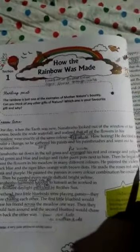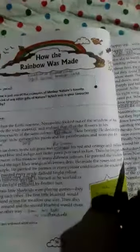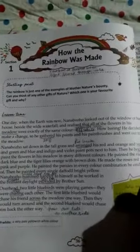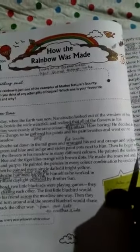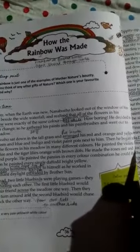Nana Bozo sat down in the tall grass and arranged his red and orange and yellow and green and blue and indigo and violet paint pots next to him.